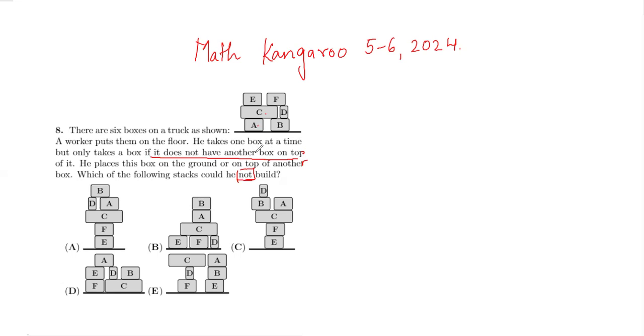For example, he cannot directly take D because F is on top of D. Similarly, you can't take B until D is removed from on top of it. So that is what it means. Whenever we have questions like this, let's start with the method of elimination.